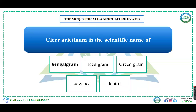In examinations like IBPS, questions are asked regarding botanical names. Cicer arietinum is the scientific name of which crop — Bengal gram, red gram, green gram, coffee, or lentil? Cicer arietinum is the scientific name of Bengal gram. You must remember the scientific names of various important crops because exams like IBPS are asking for scientific names. Scientific names and plant families are very important for examinations.